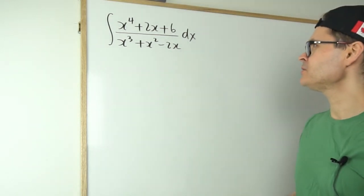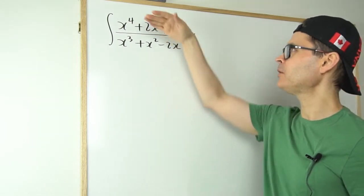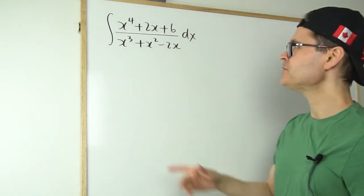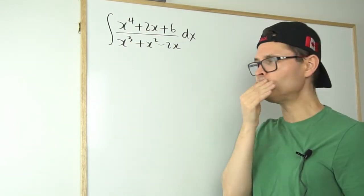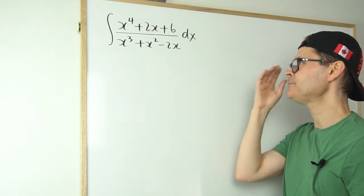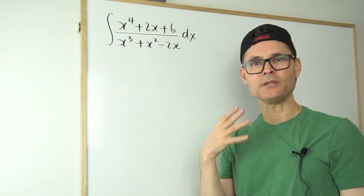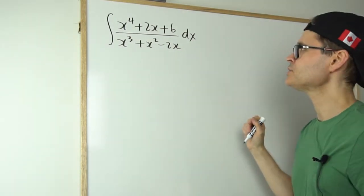All right, welcome back to the video. Today we're taking a look at an integral where we have a polynomial in the numerator, a polynomial in the denominator, and the degree of the numerator is greater than the degree of the denominator, which makes me think automatically there's no special pattern that I can see here. So what I'm going to do is divide the denominator into the numerator using long division.